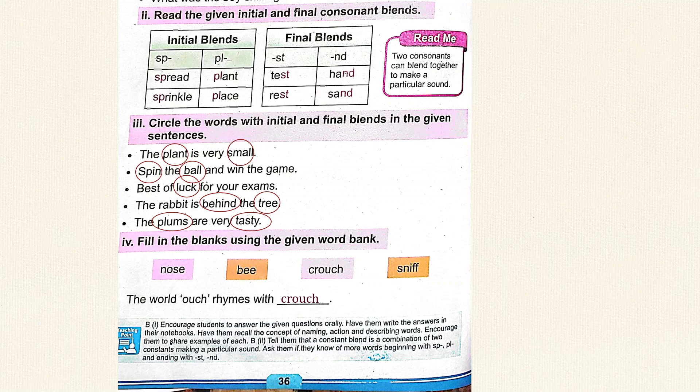Best of luck for your exams — in this sentence, you have to circle luck. The rabbit is behind the tree — in this sentence, you have to circle behind and tree. The plums are very tasty — in this sentence, you have to circle plums and tasty.